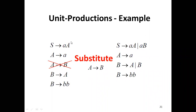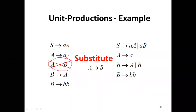First, we take the production A to B from our production set. This is a unit production. Now we substitute A by B in the other productions. Wherever A appears, we replace it with B, and we get the corresponding derived productions.